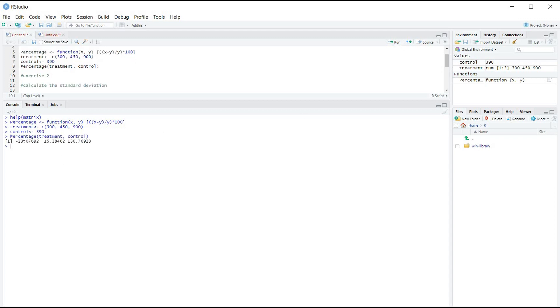And now we will use the function and let's run it. And as you can see here, the percentage is in minus. It means decrease. And here is positive, which means increase. So here there is 23% decrease, 15% increase and 130% increase.